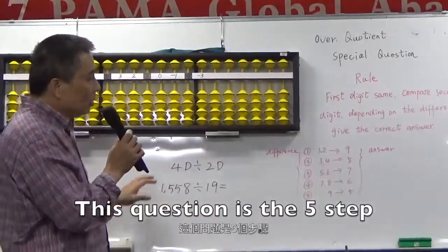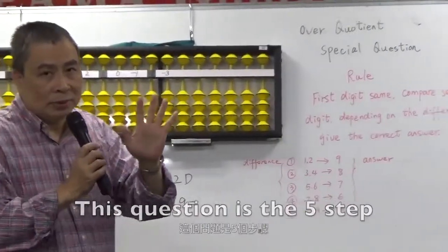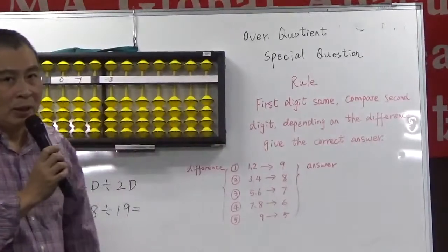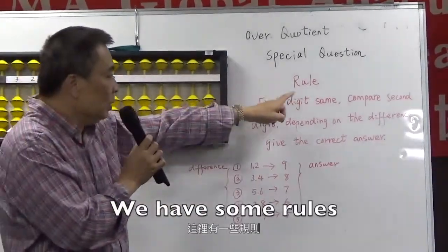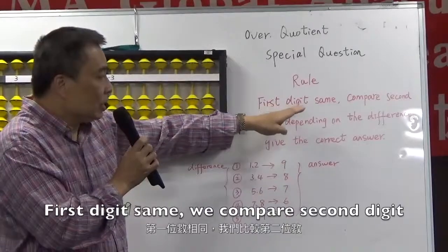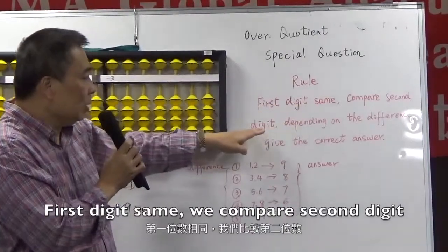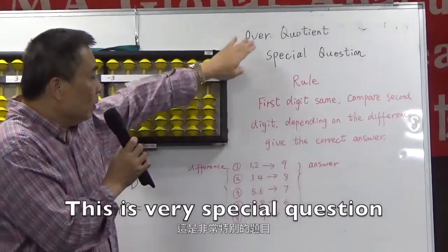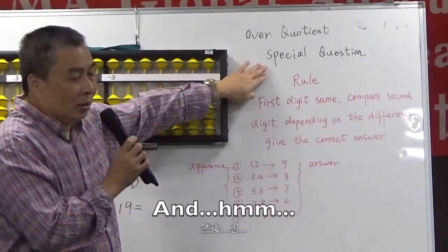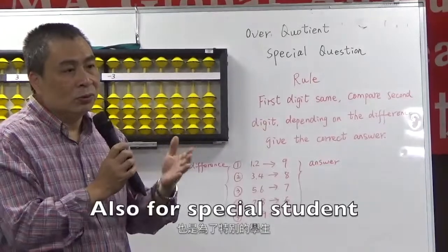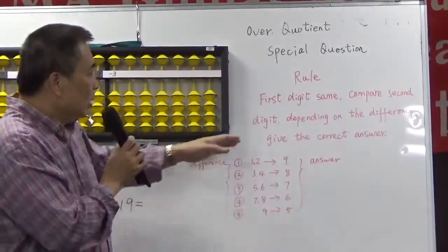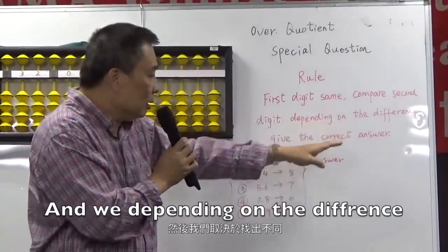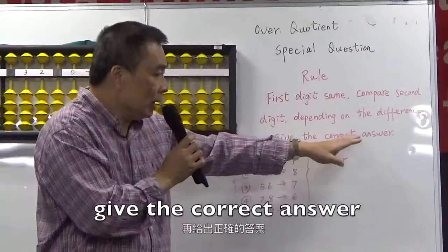This question uses the 5 steps. Over cushion, special question — we have some rules. If 4DG is same, we compare 2DG, which we already learned. This is a very special question, and also for special students. A little hard. We depend on the difference and give the correct answer.